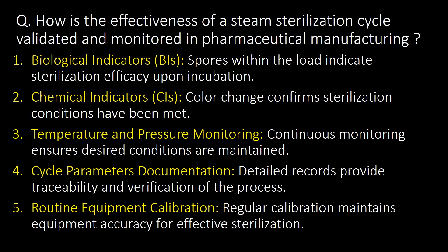How is the effectiveness of a steam sterilization cycle validated and monitored in pharmaceutical manufacturing? There are mainly five methods: first, using biological indicators; second, using chemical indicators; third, temperature and pressure monitoring; fourth, cycle parameters documentation; and fifth, routine equipment calibration.